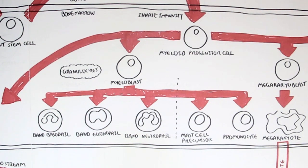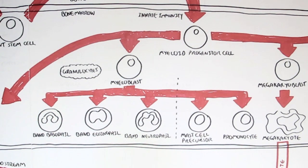Whenever a cell has 'precursor' or 'pro' within its name, it means it's not yet that particular cell. For example, the mast cell precursor means it's not a mast cell yet, but it will become one. And the promonocyte means it's not a monocyte yet, but it will become a monocyte.